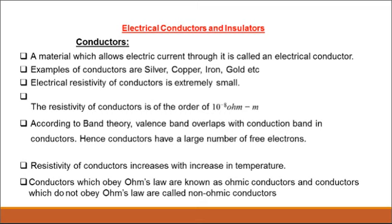Conductors means a material which allows electric current through it is called an electrical conductor. All metals are conductors — that means all metals allow electrical current to pass through them. A conductor consists of a very large number of free electrons. Examples of conductors are silver, copper, iron and gold. The electrical resistivity of a conductor is extremely small.